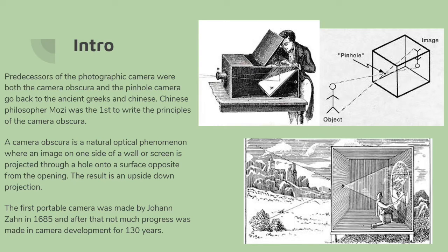Predecessors of the photographic camera — both the camera obscura and the pinhole camera — go back to the ancient Greeks and Chinese. Chinese philosopher Mozi was the first to write the principles of the camera obscura. A camera obscura is a natural optical phenomenon where an image on one side of a wall or screen is projected through a hole onto a surface opposite from the opening. The result is an upside-down projection.